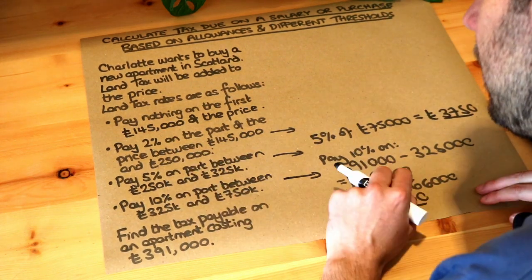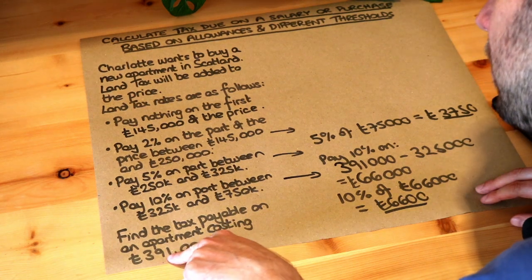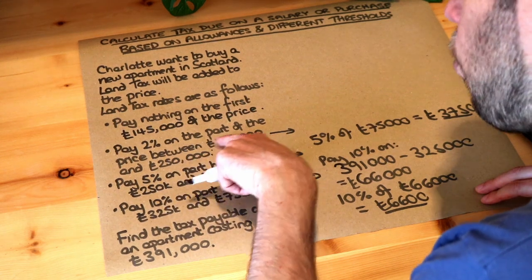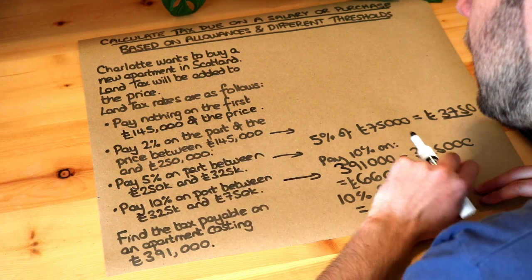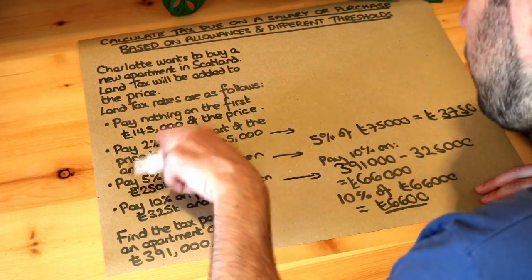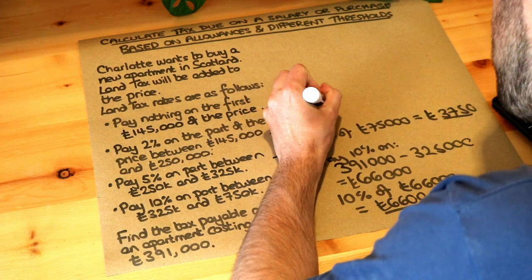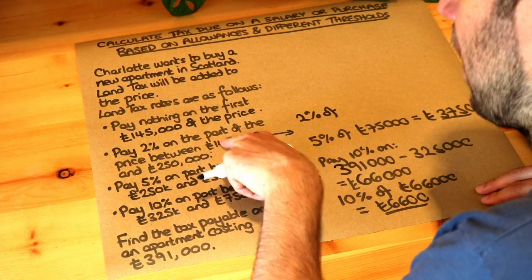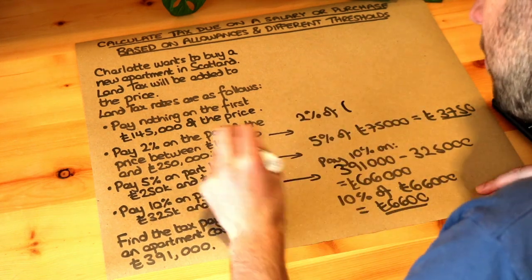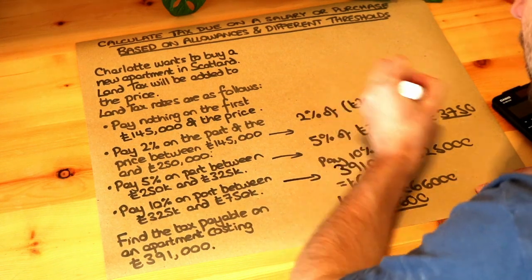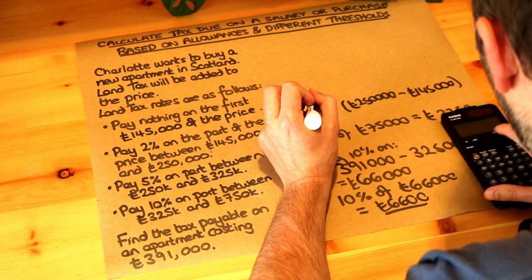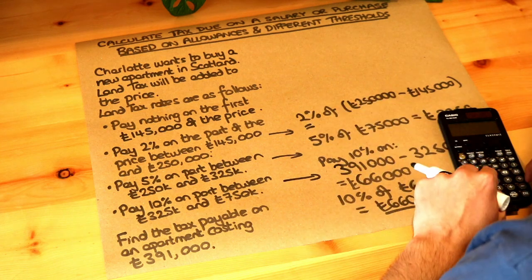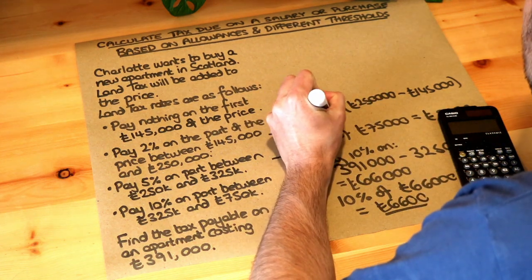What about the 2% band? £391,000 is well over the £250,000 threshold, so we're going to be paying 2% on all the amount between £145,000 and £250,000. We find 2% of (£250,000 minus £145,000). That's 0.02 times £105,000, which equals £2,100.